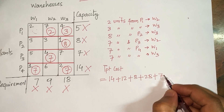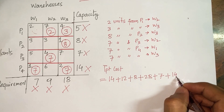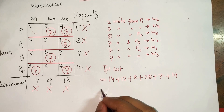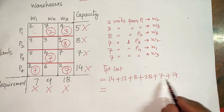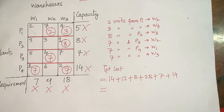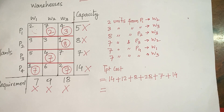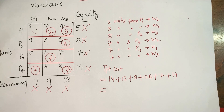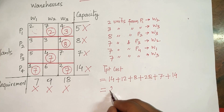Adding the costs: 14 + 12 + 8 + 28 + 7 + 14 = 83 rupees total transportation cost.